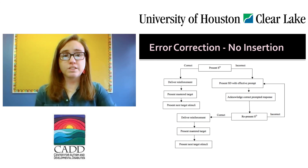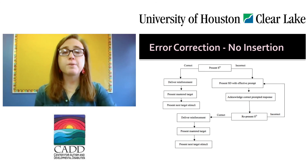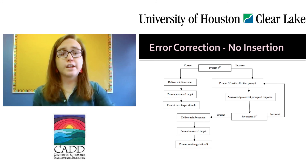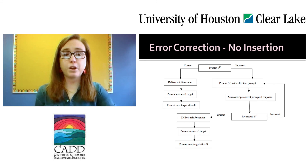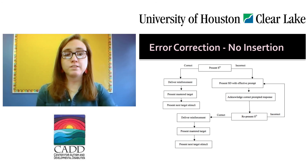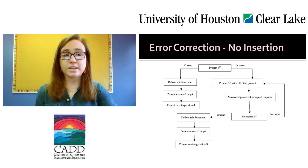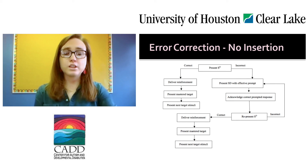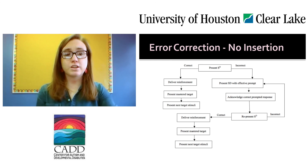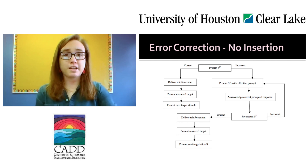In the no-insertion error correction procedure, the experimenter presented the SD; contingent on a correct response, delivered reinforcement, presented a master target, and presented the next training target. Contingent on an incorrect or no response, the experimenter presented the SD with an effective prompt, acknowledged the correct prompted response, and immediately repeated the initial SD. Contingent on a correct response, the experimenter delivered reinforcement, presented the master target, and then presented the next training target. Contingent on an incorrect response to the re-presentation, the error correction procedure was repeated up to a maximum of five times.